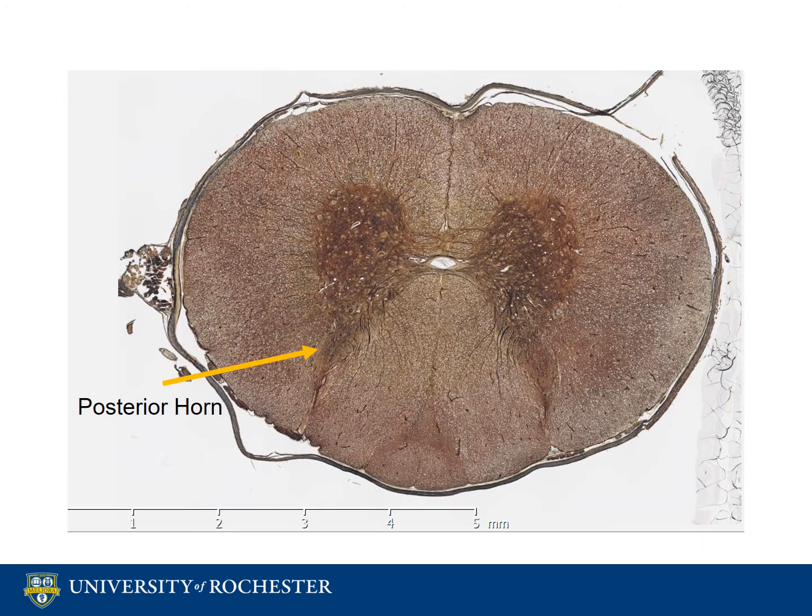The thinning section of gray matter is the posterior horn, also called the dorsal horn. It receives signals from several different areas such as fine touch, proprioception, and vibration.